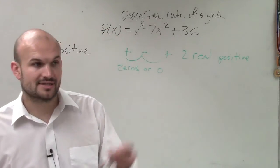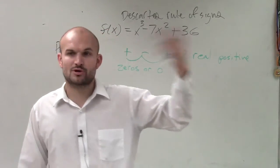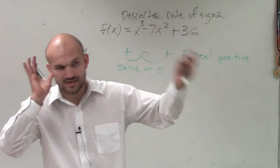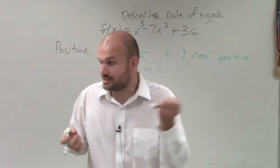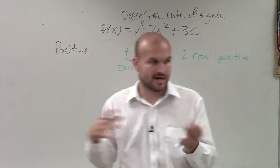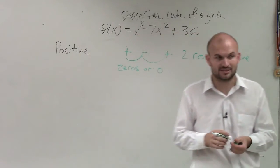So if you have two possibilities, you just subtract an even number, which would be 2, to get to 0. So you have two possibilities. It's either 0 or it's 2. OK? And we'll learn how to determine what actually it's going to be.